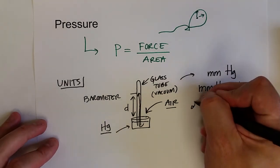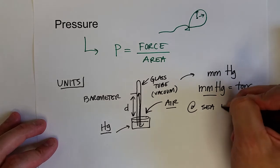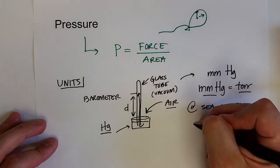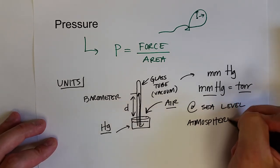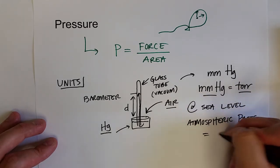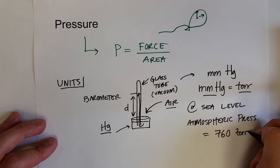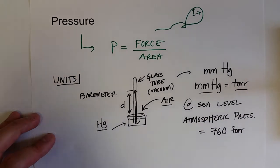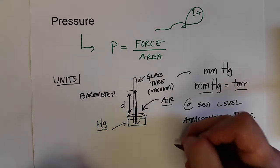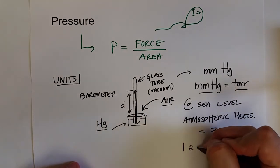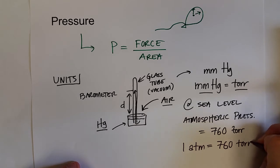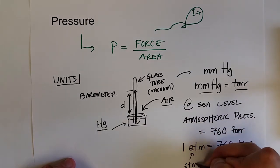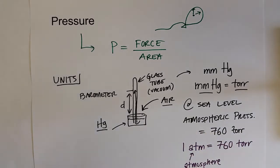At sea level, atmospheric pressure is 760 torr or 760 millimeters of mercury. We can use a unit for convenience and say that is the pressure of one atmosphere. Atm is atmosphere, so one atmosphere, and that is equal to 760 torr, 760 millimeters of mercury.